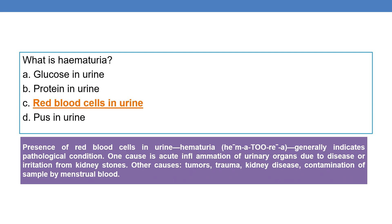What is hematuria? Hematuria is the presence of red blood cells in the urine. It generally indicates a pathological condition. One cause is acute inflammation of urinary organs, or a disease or irritation from kidney stones. Other causes include tumors, trauma, kidney disease, and contamination of the sample by menstrual blood.